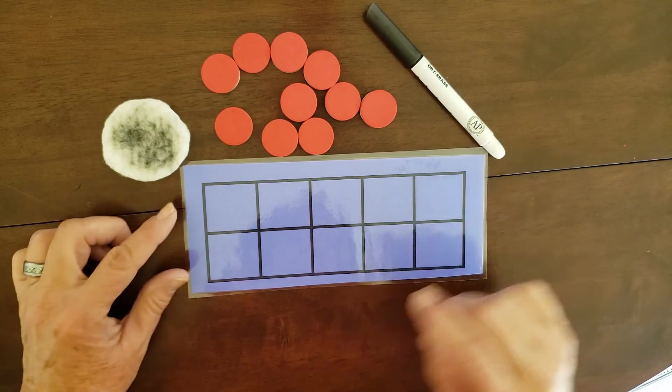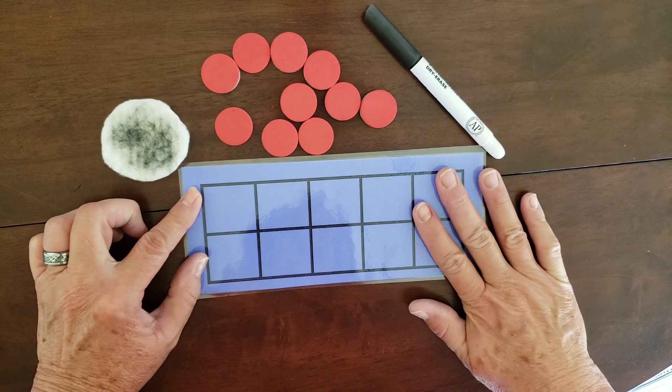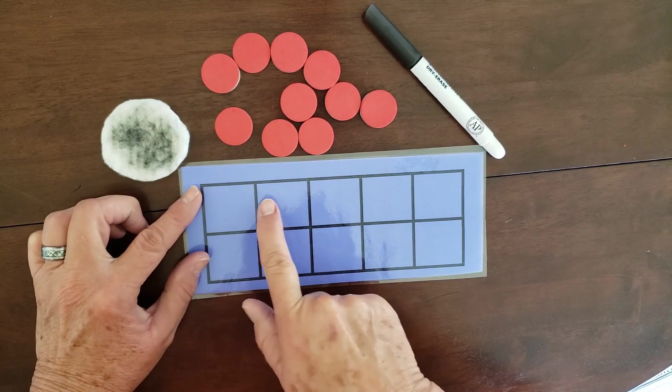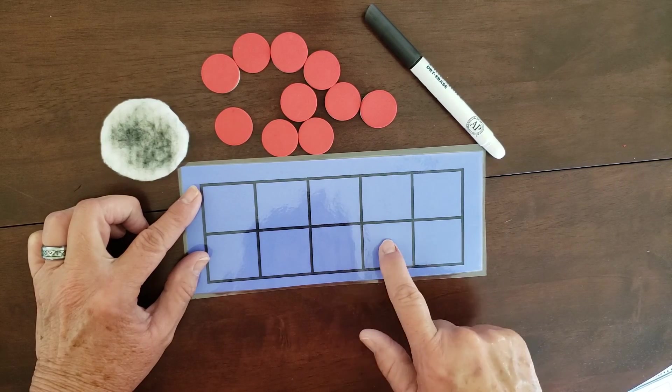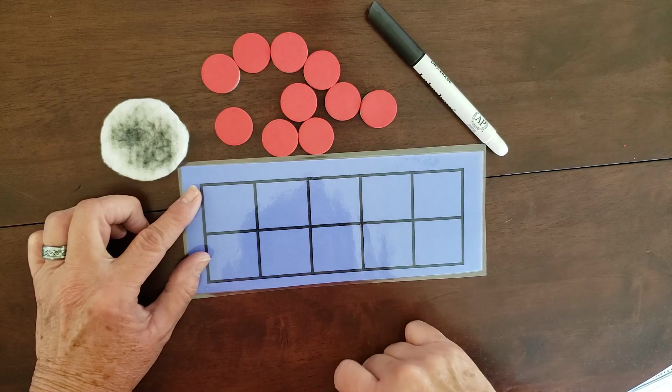We have something new this week. Everybody has in your bag a 10 frame that looks like this. We call it a 10 frame because it has 1, 2, 3, 4, 5, 6, 7, 8, 9, 10 boxes which look like a frame. 10 frame.